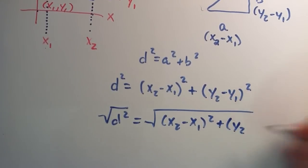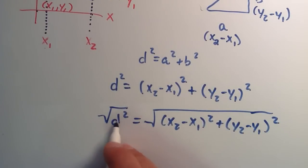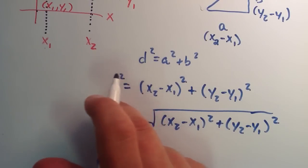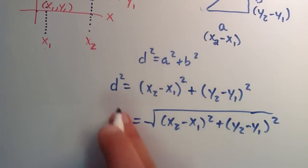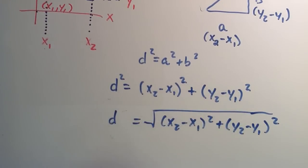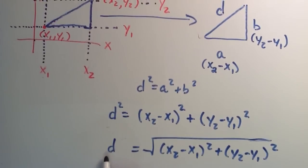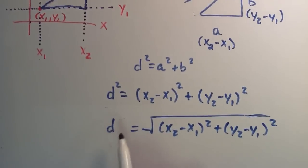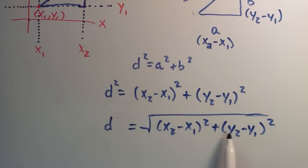And we almost have it now. Anything that is squared under a square root — the square and the square root simply undo each other — so we're just left with d. By using the Pythagorean theorem, we derived the distance formula: the distance between any two points on the xy plane equals the square root of (x2 minus x1) squared plus (y2 minus y1) squared.